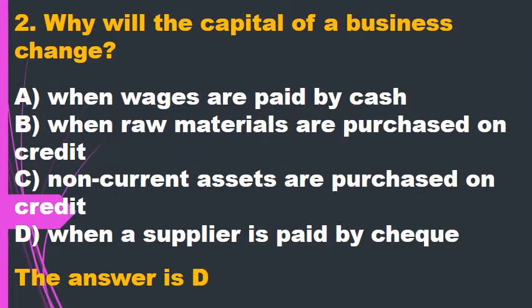Question 2. Why will the capital of a business change? A. When wages are paid by cash. B. When raw materials are purchased on credit. C. Non-current assets are purchased on credit. D. When a supplier is paid by check. The answer is D.